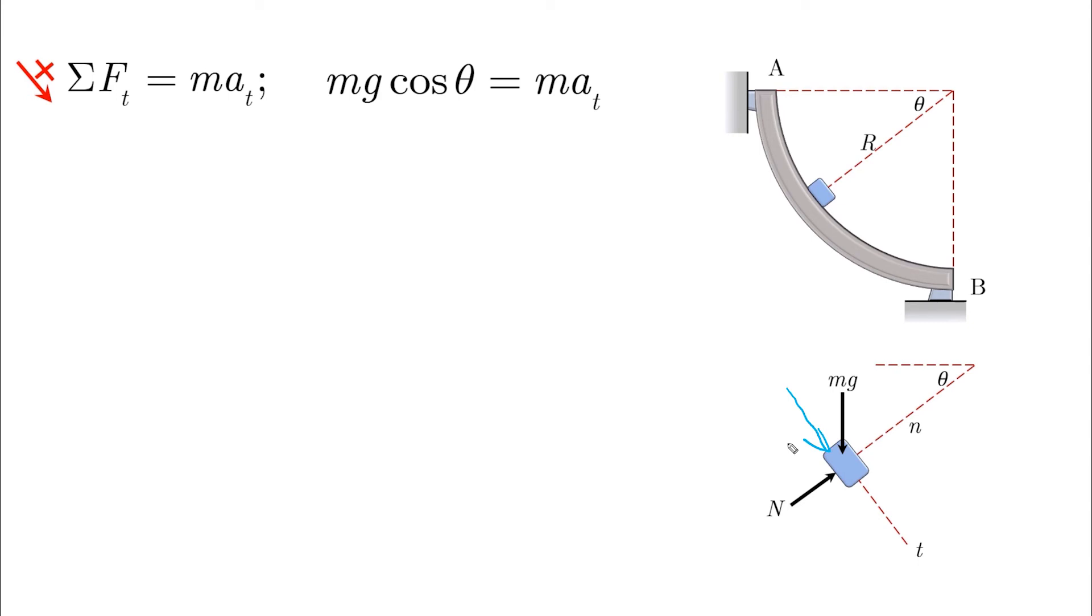And if you pick out m from both sides, you'll find out that at is equal to g cosine theta. And if you want to solve for the velocity, for example.